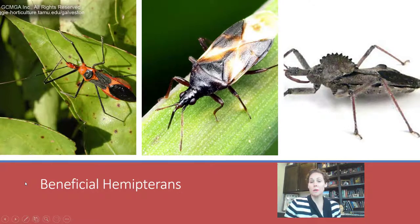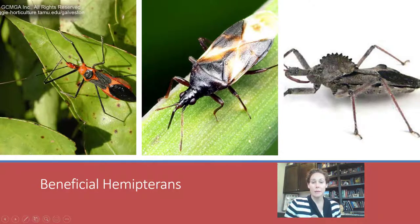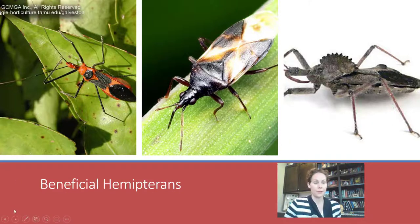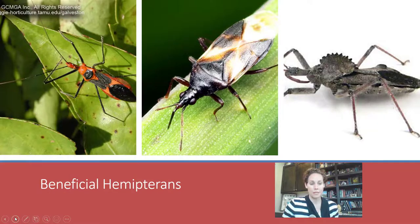Some hemipterans are beneficial as predators, eating pest insects out of your crops. In that middle picture you can again see the triangle where those wings are folded down and haven't yet overlapped. There are lots of different types of hemipterans.